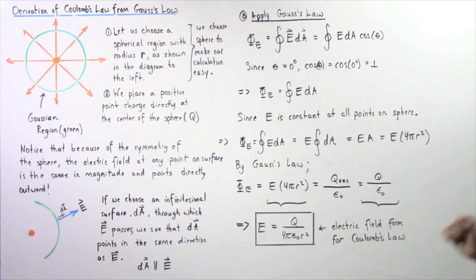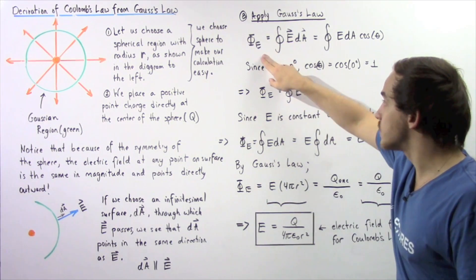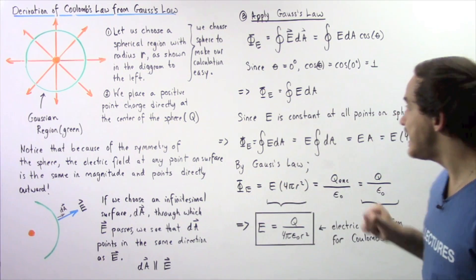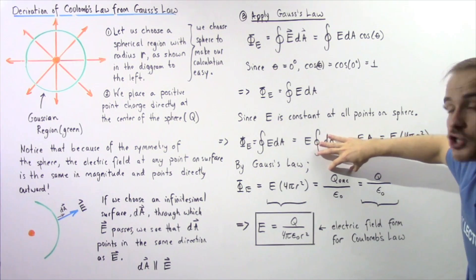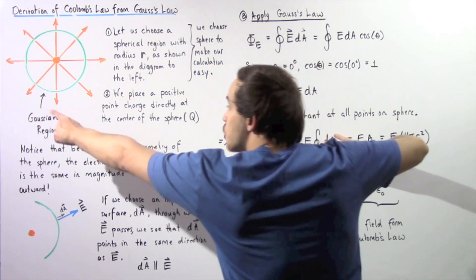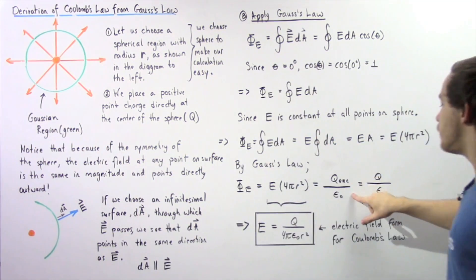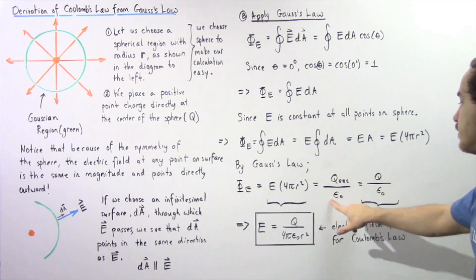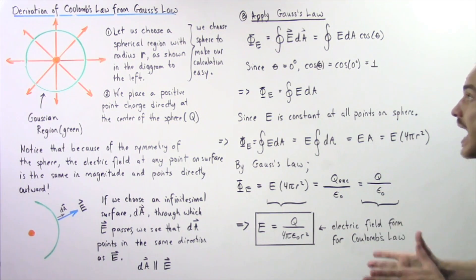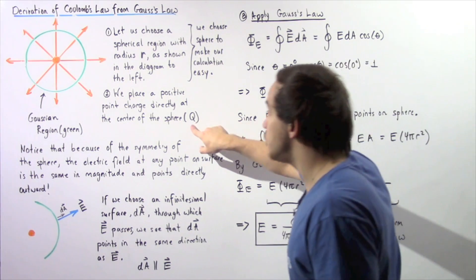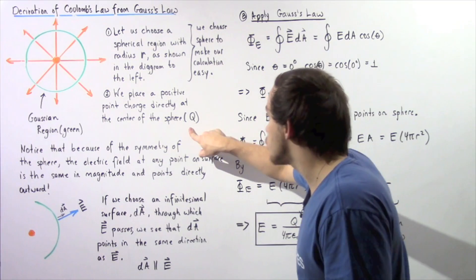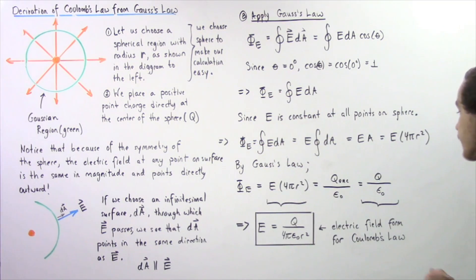Now, we actually apply Gauss's law, which states that the electric flux given by phi E is equal to this quantity, which is equal to our charge enclosed within our chosen region divided by the permittivity of free space given by epsilon naught. We can replace q enclosed with simply q because that's what we chose our charge to be in the beginning. The q enclosed becomes the q.